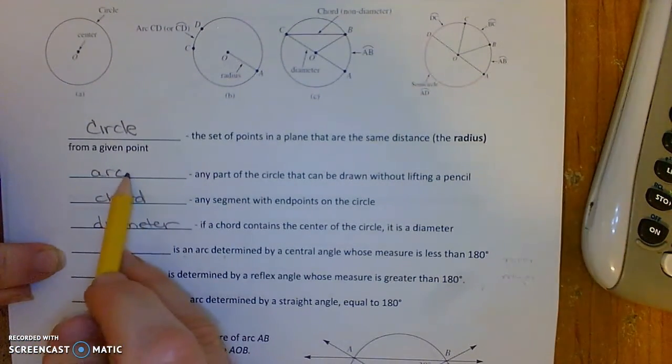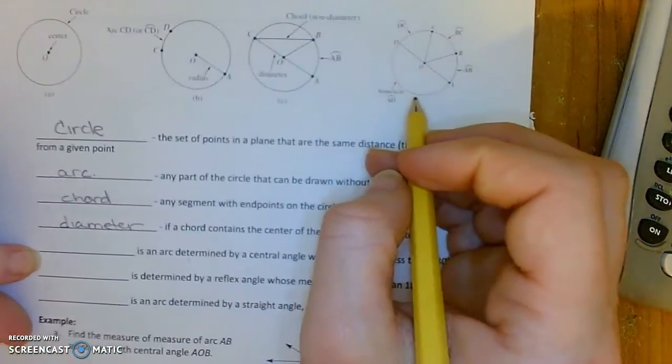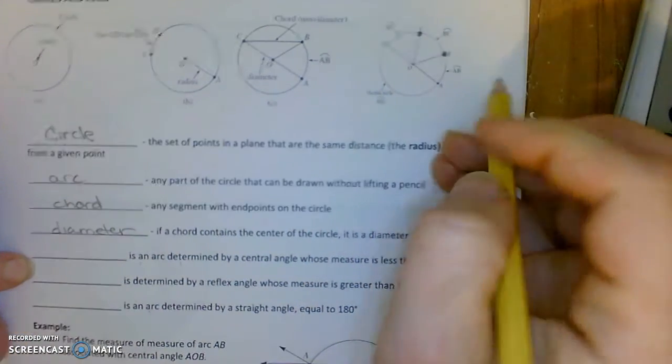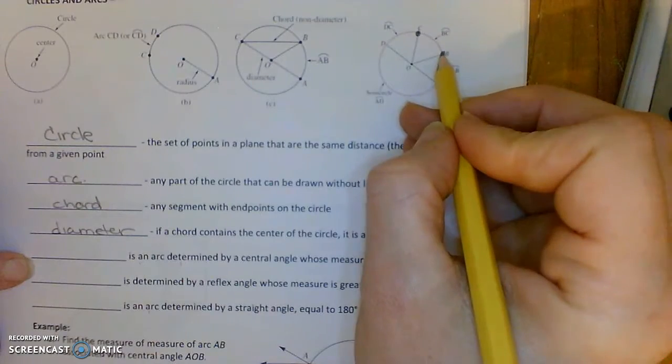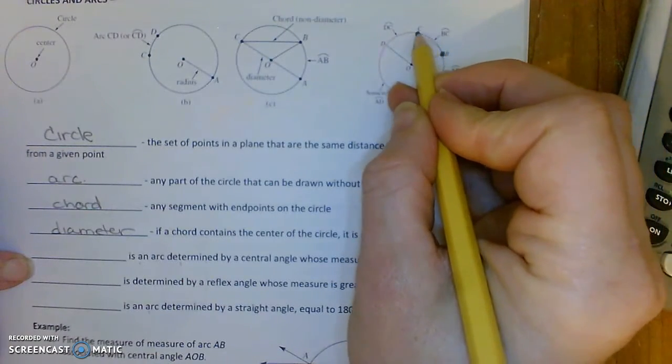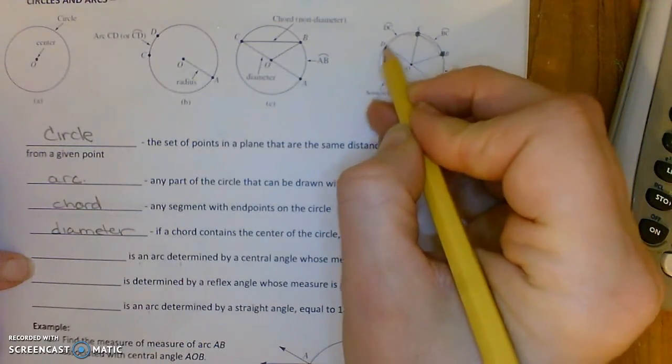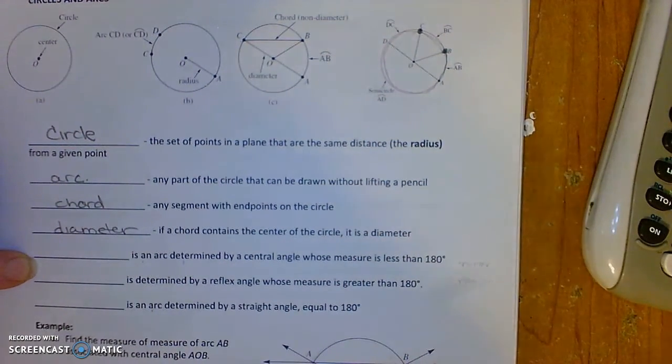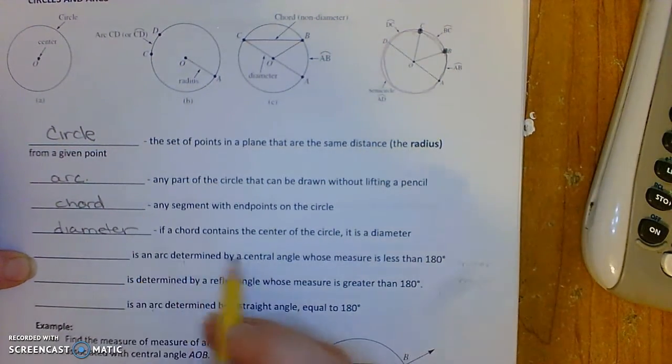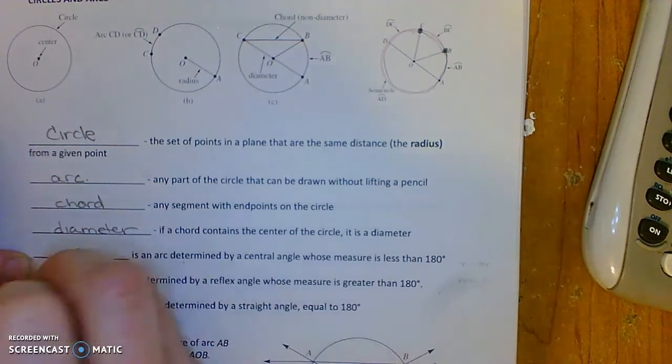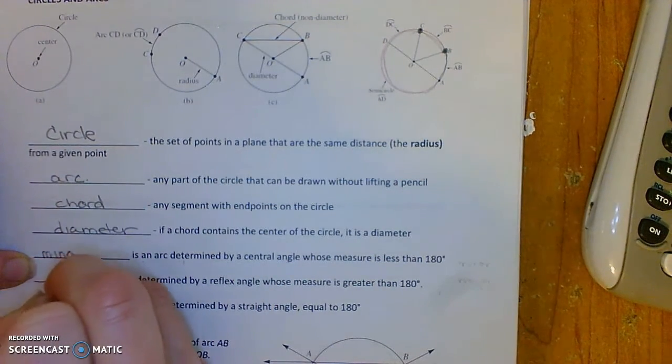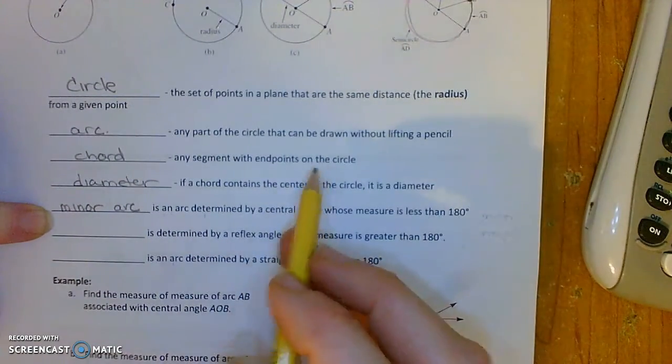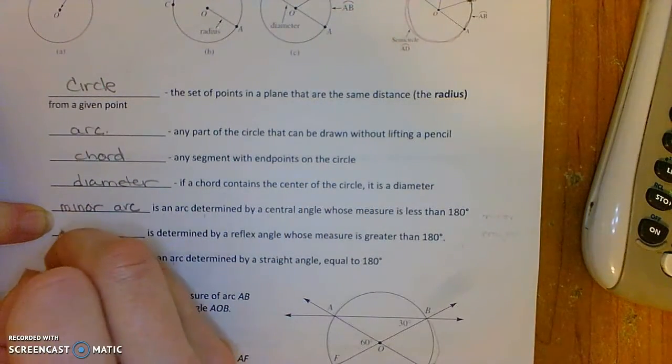And there's also special types of arcs. Notice that if I give you two points, say here, B and C on the circle, you can talk about this smaller arc that is in between those two points, but you can also, with those two points, discuss this larger arc there. So the smaller arc, the arc that's determined by a central angle less than 180 degrees, it's called the minor arc. And the other arc that's determined by the larger angle is called the major arc.